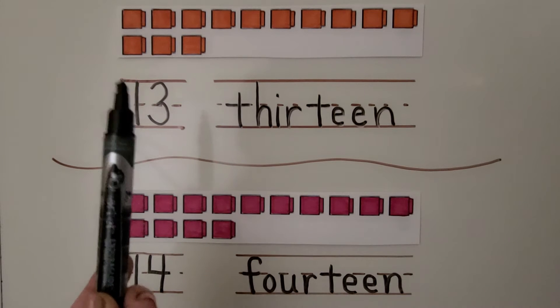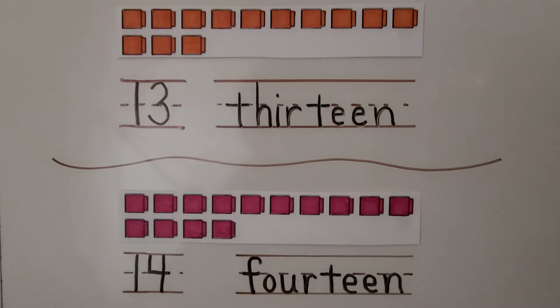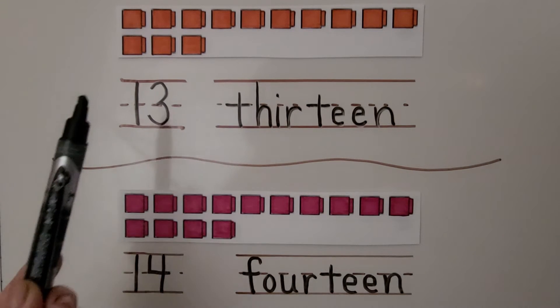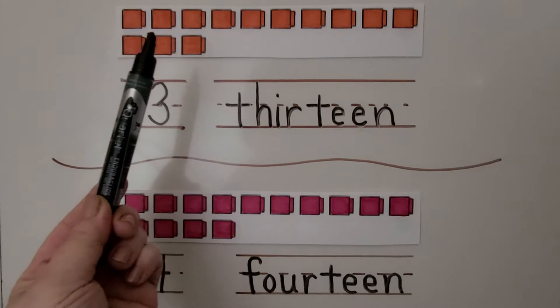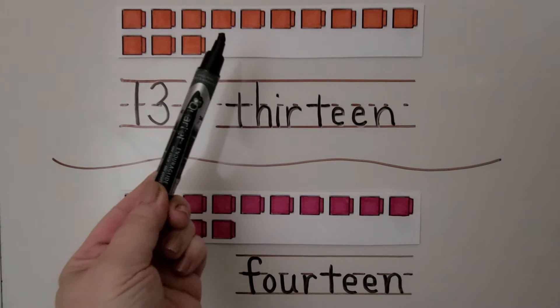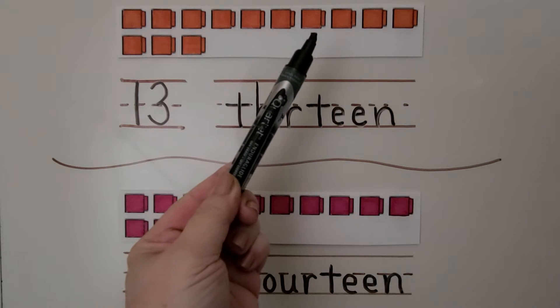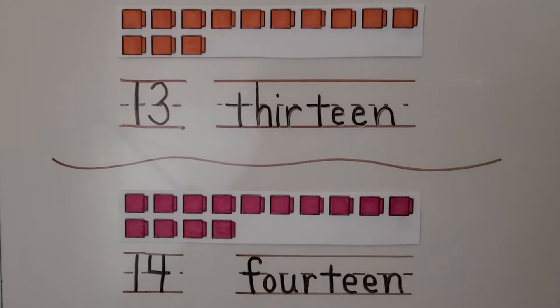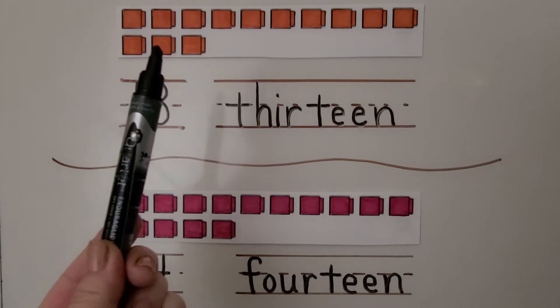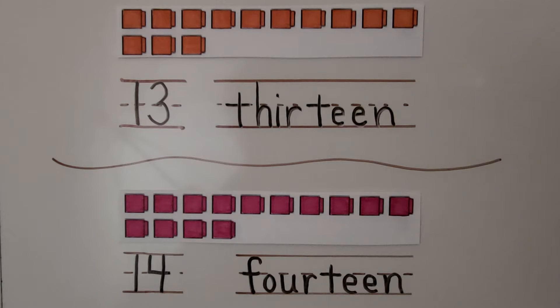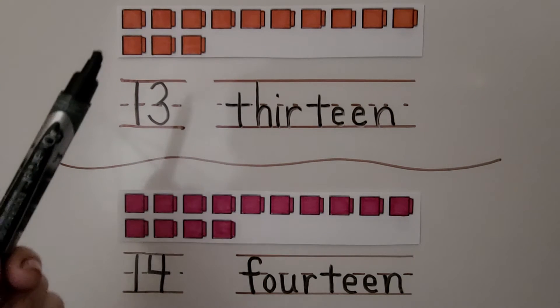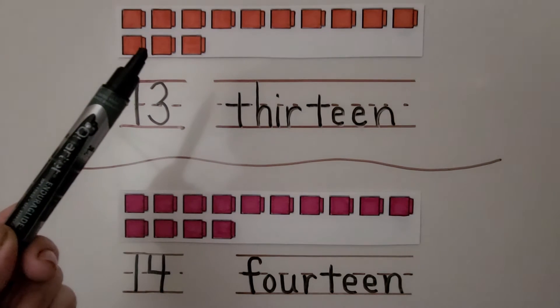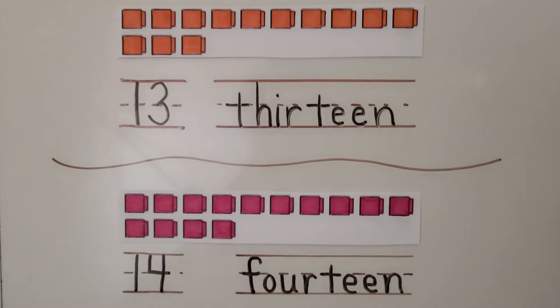Here we have some orange cubes. Let's count the cubes in the top row. 1, 2, 3, 4, 5, 6, 7, 8, 9, 10. There are 10 cubes in the top row. There are 1, 2, 3 cubes in the bottom row. 10 cubes and 3 cubes is 13 cubes.